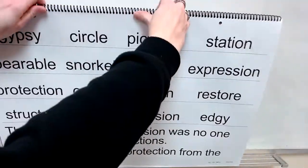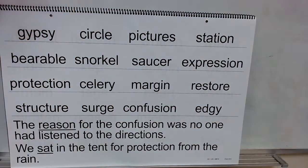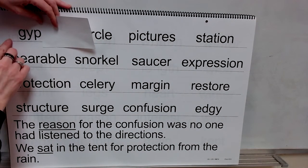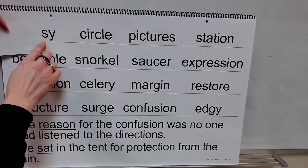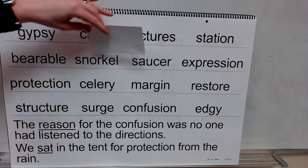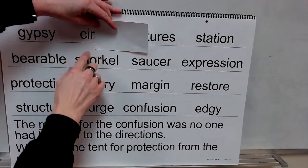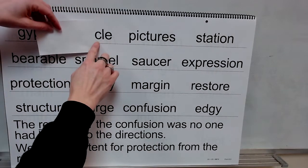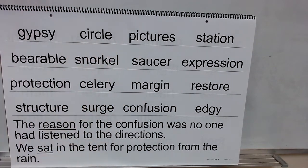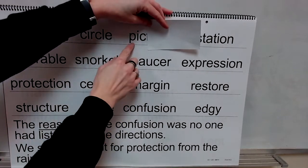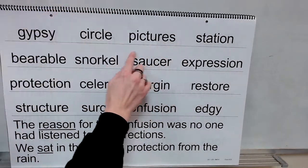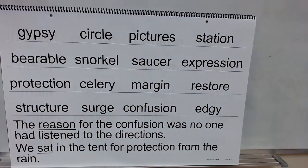Now let's read these words. Syllable: gyp. Syllable: see. Word: gypsy. Syllable: sir. Syllable: col. Word: circle. Syllable: pick. Syllable: churves. Word: pictures.